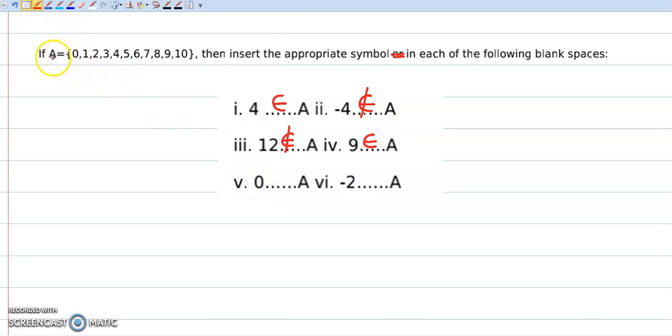0 is also an element of set A. So we write 0 belongs to set A. And lastly, negative 2.